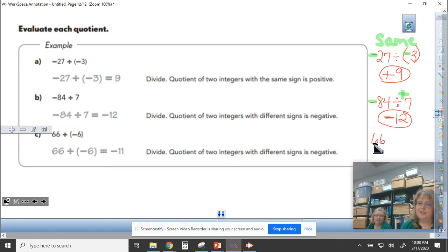Or if my first number is a positive number like positive 66 divided by a negative 6, again I'm just looking to see, oh these are opposite signs, a positive and a negative, my answer will be negative. Then I divide like normal: 66 divided by 6 is 11. So again, same signs I get a positive, different signs I get negative answers every time.